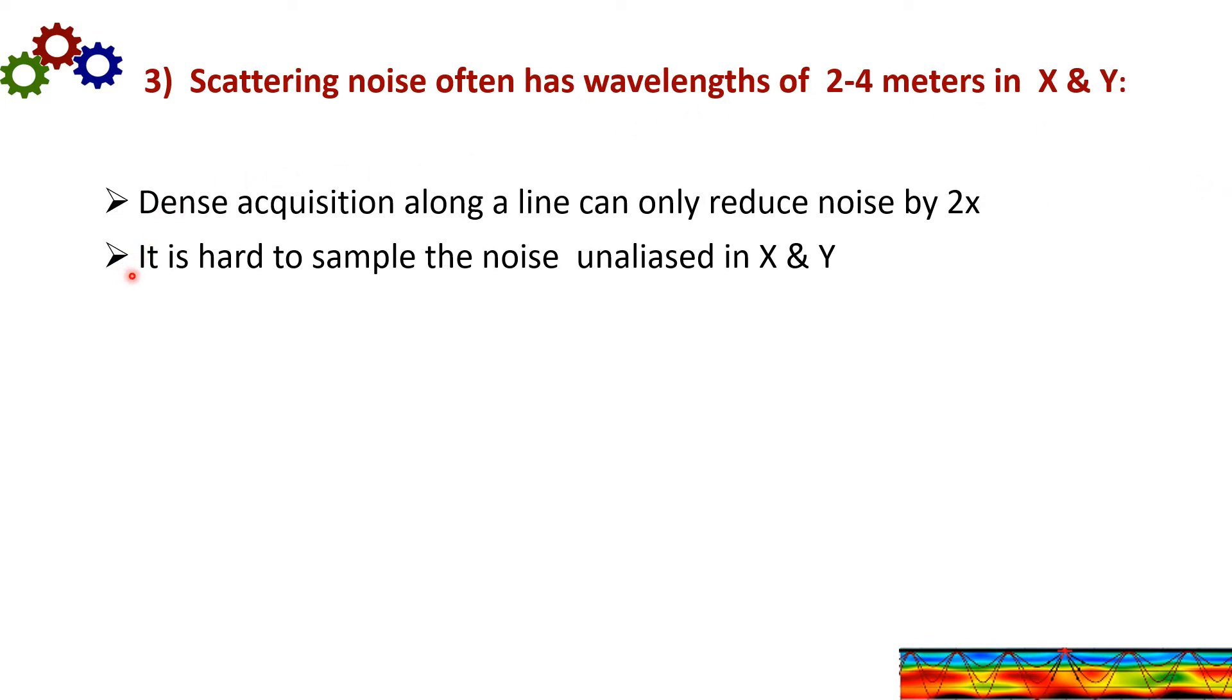And it is hard to sample the noise unaliased in X and Y because it requires such small spacing. You may be able to do something like a wide line. However, you don't need to sample the noise unaliased if you can measure the scattering distortion. That handles these small scale wavelengths.